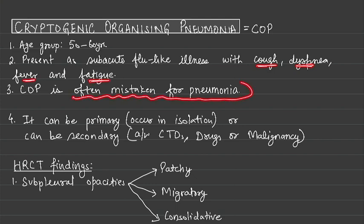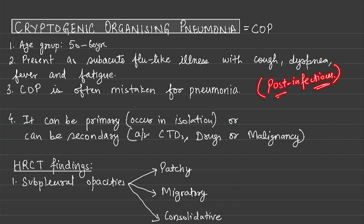COP is often mistaken for pneumonia, and it is also seen post-infectious. In many cases, there is a history of preceding upper or lower respiratory infection, and after that the signs and symptoms of COP appear. It can be primary when it occurs in isolation, or it can be secondary when it is associated with connective tissue diseases, some drugs, or underlying malignancy.